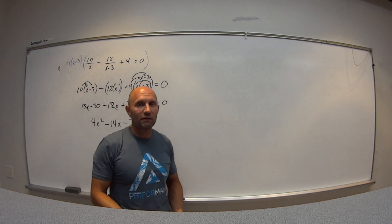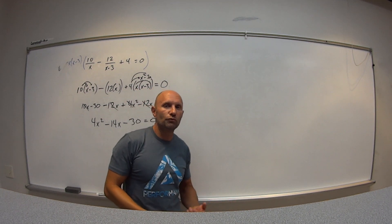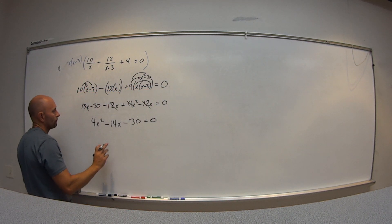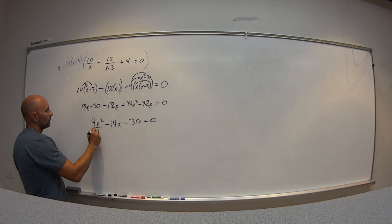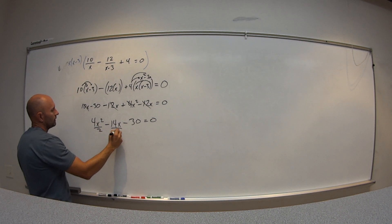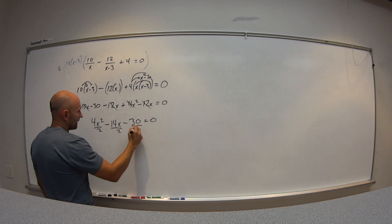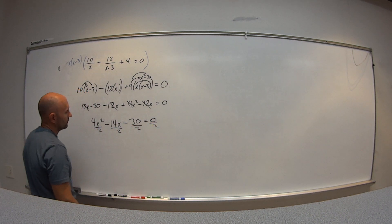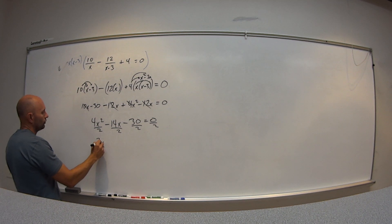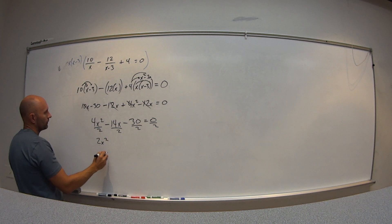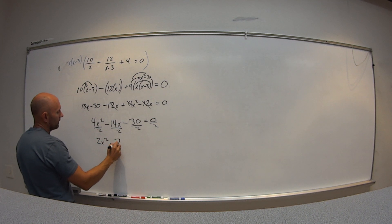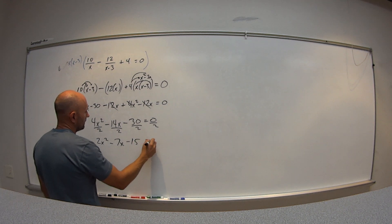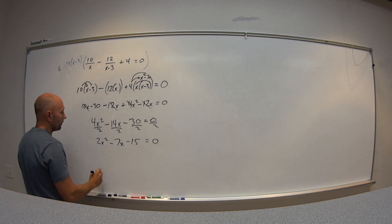I need to try to factor this and use the zero product property rule if I can; if not, use the quadratic formula. But first I can divide everything by 2 to make the numbers nicer. So I get 2x squared minus 7x minus 15 equals 0.